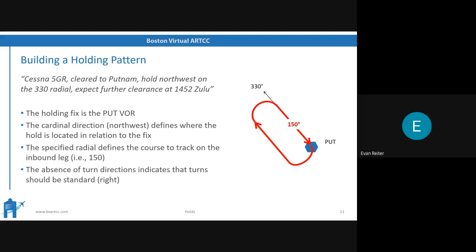Let's talk about a couple of underlying concepts. VORs are the only navigation aid where we talk about radials. All a radial is, is just a line drawn from the center of the VOR outward on whatever heading you've chosen. So in the case of the 330 radial, they've just taken a dot right in the middle of the VOR and drawn a line on the 330 heading. That's what the 330 radial is.